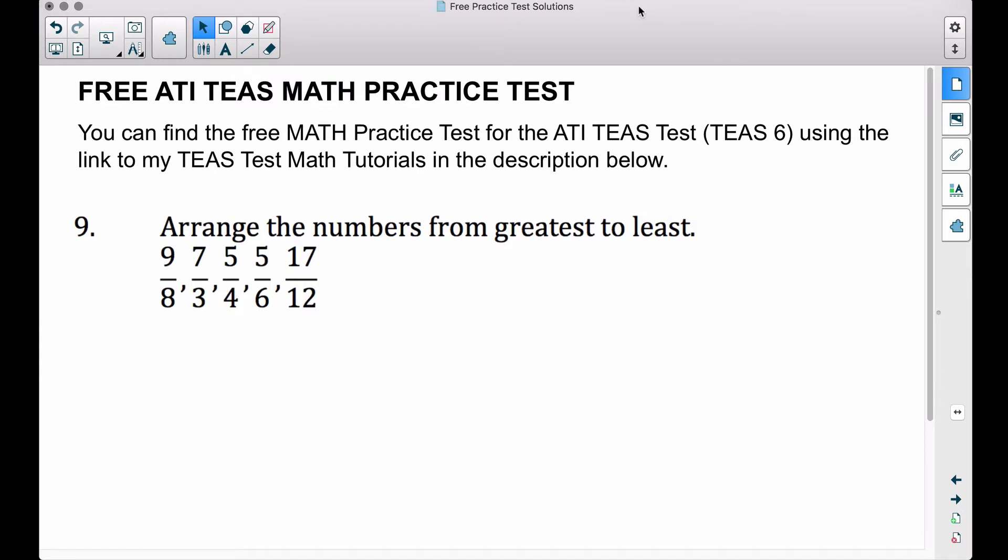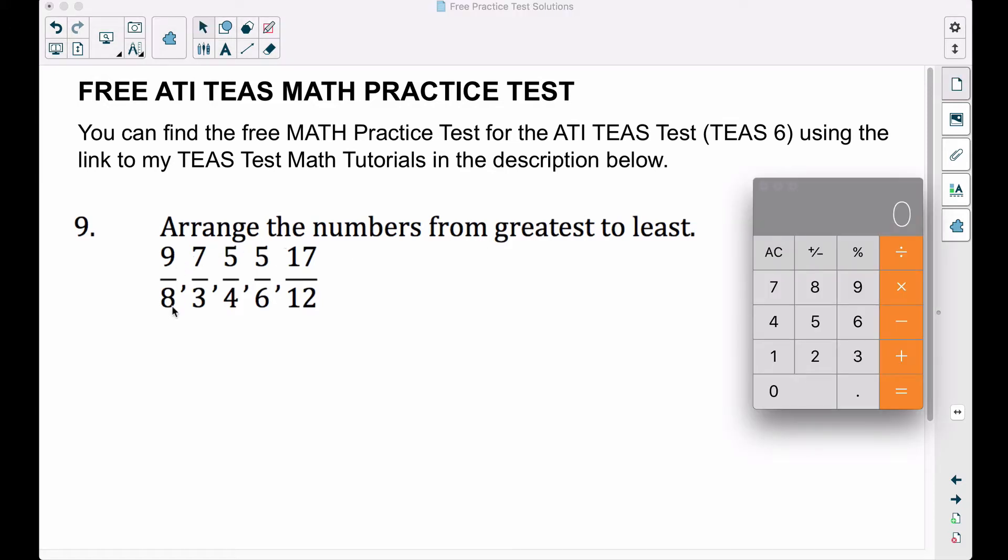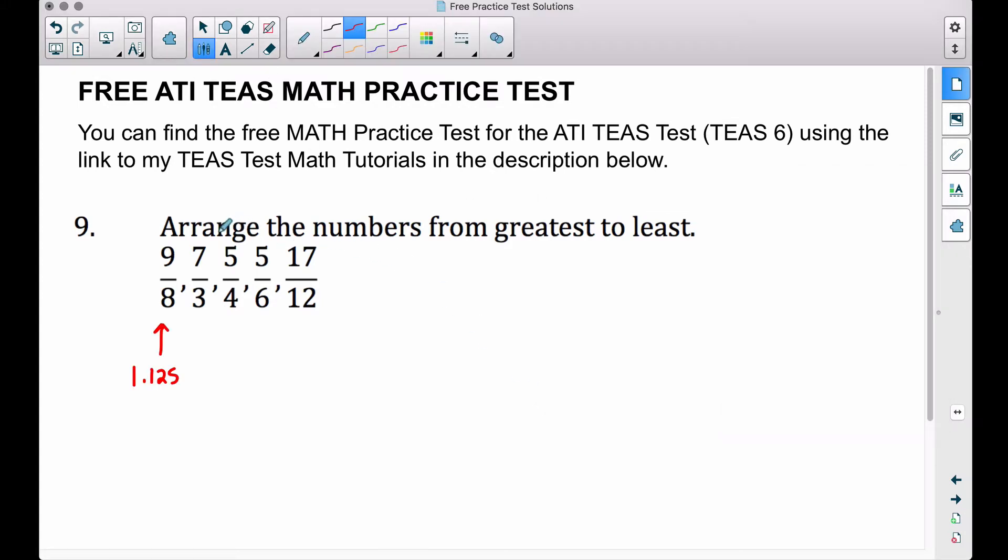We want to arrange these fractions from greatest to least. In previous videos where I've done this back in the goal-based objectives, I wanted you to think about money. So 9/8, let's take 9 and divide it by 8. That is what 9/8 is, so 9 over 8, 9 divided by 8 is 1.125. Let's repeat this process for all of the other fractions.